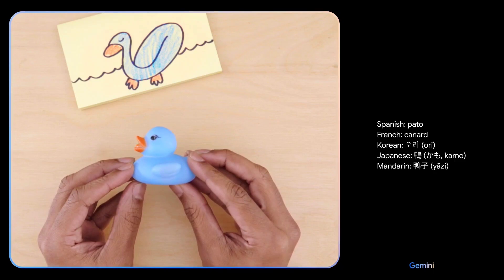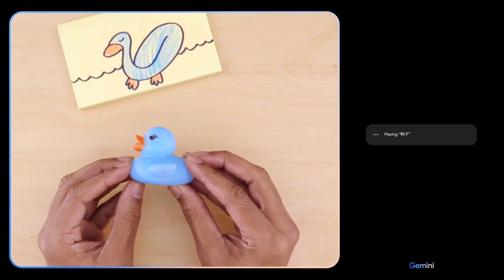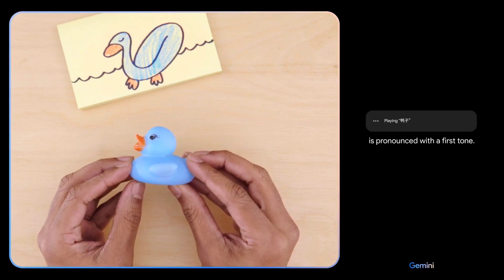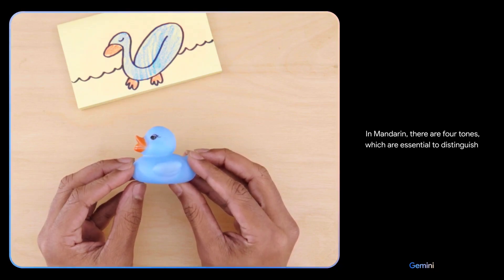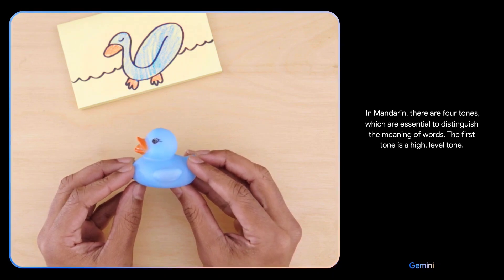Can you explain how to pronounce the Mandarin one? Is it Ya-tsu? Ya-tsu is pronounced with a first tone. In Mandarin, there are four tones, which are essential to distinguish the meaning of words. The first tone is a high level tone. Oh, okay.